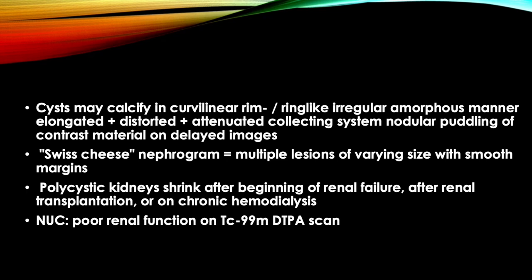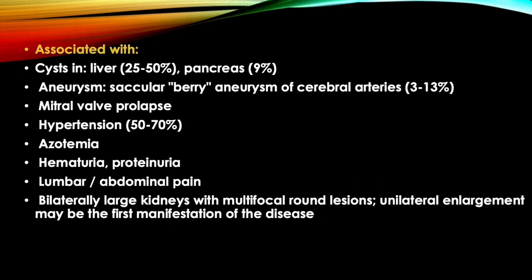Nuclear scan shows poor renal function on DTPA Technetium-99m scan. They are associated with cysts in liver and pancreas, saccular berry aneurysms of cerebral arteries, mitral valve prolapse, hypertension, azotemia, hematuria, proteinuria, and lumbar or abdominal pain. The kidneys appear large bilaterally with multifocal round lesions.